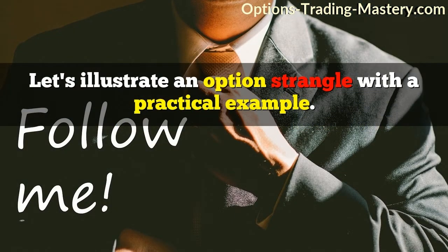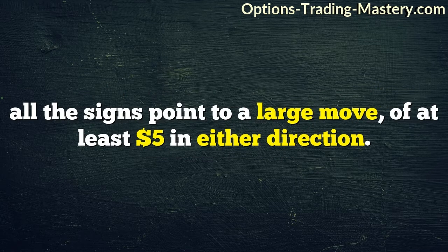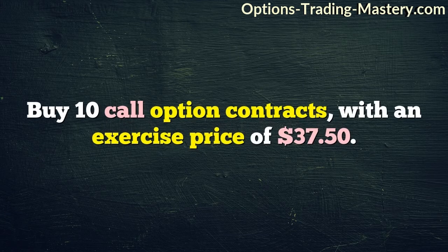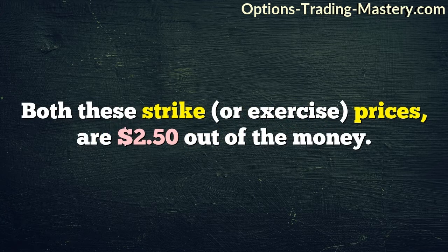Let's illustrate an option strangle with a practical example. Our stock is currently trading at $35, and we believe that within the current or next month, all the signs point to a large move of at least $5 in either direction. So here's what we do: buy 10 call option contracts with an exercise price of $37.50, and buy 10 put option contracts with an exercise price of $32.50. Both these strike, or exercise, prices are $2.50 out of the money.